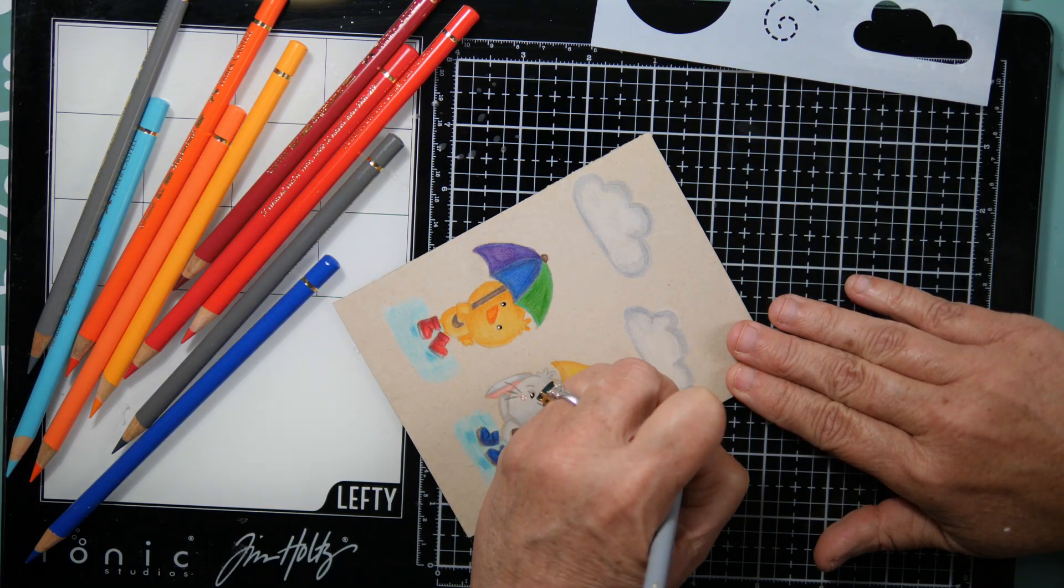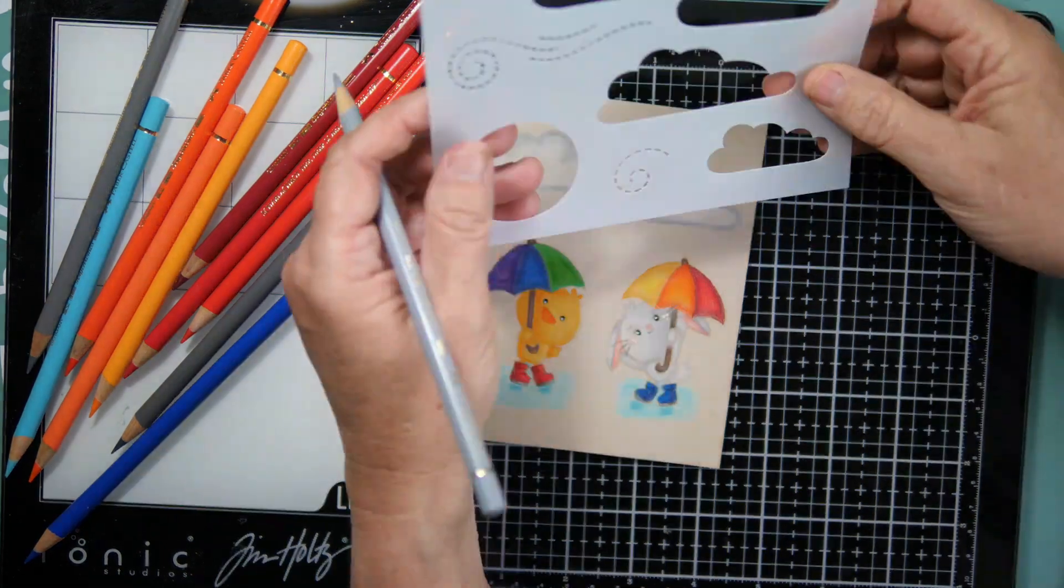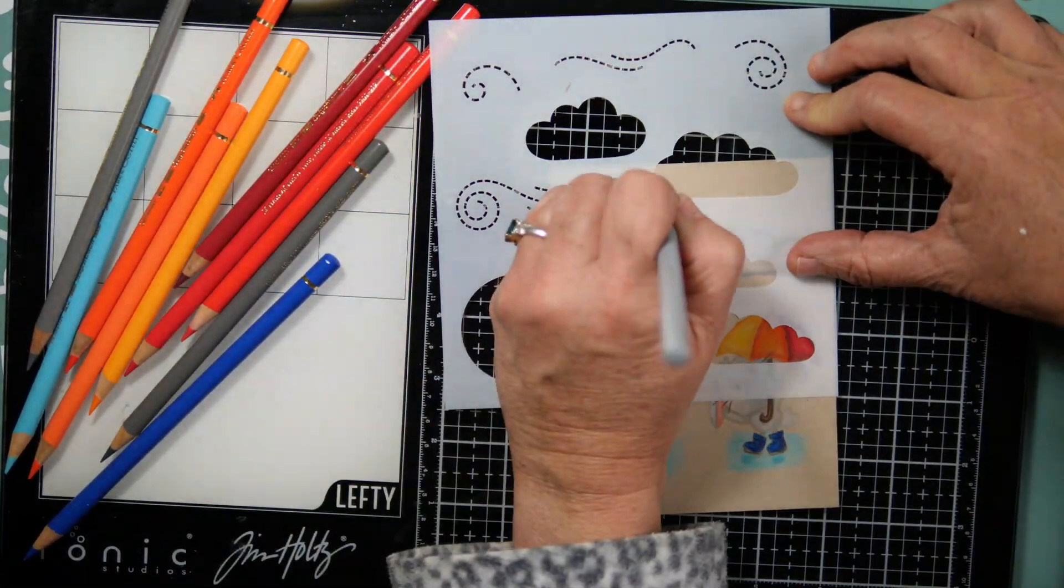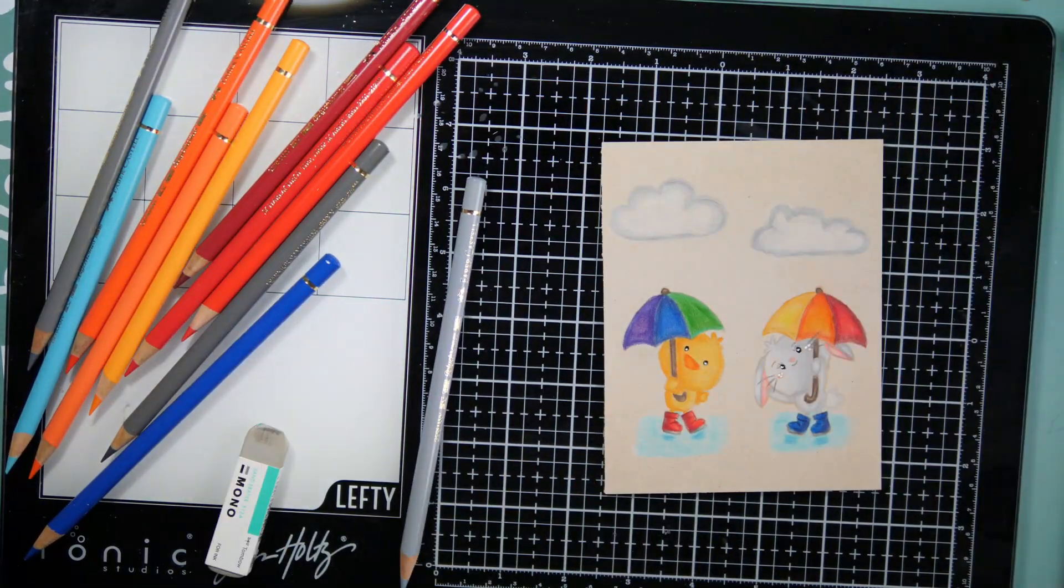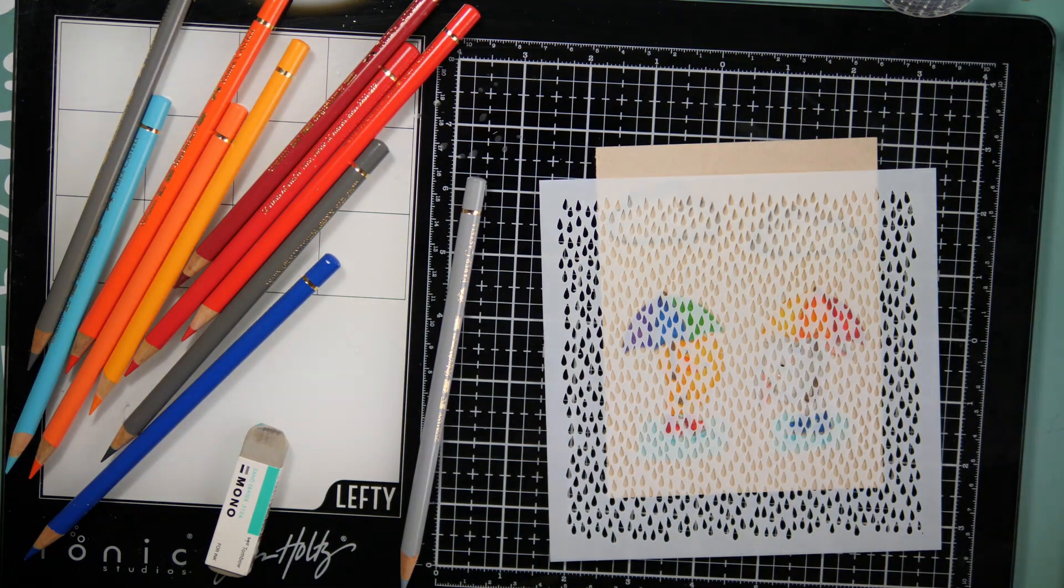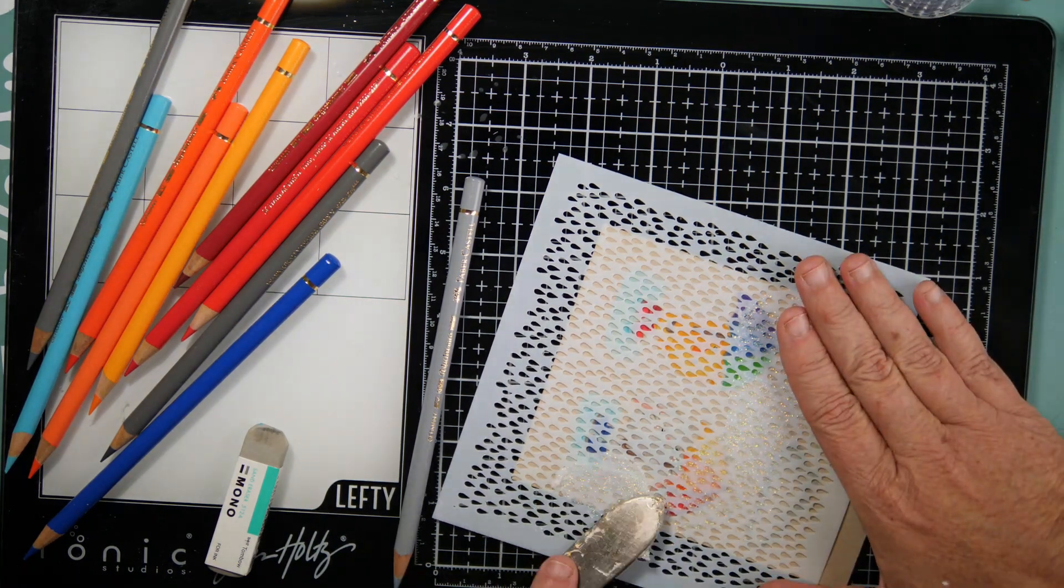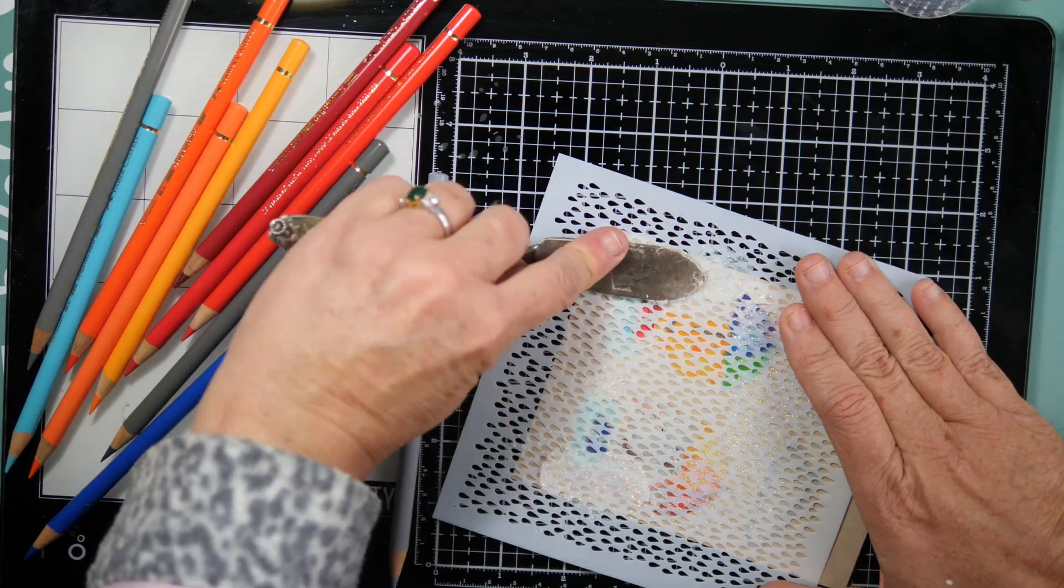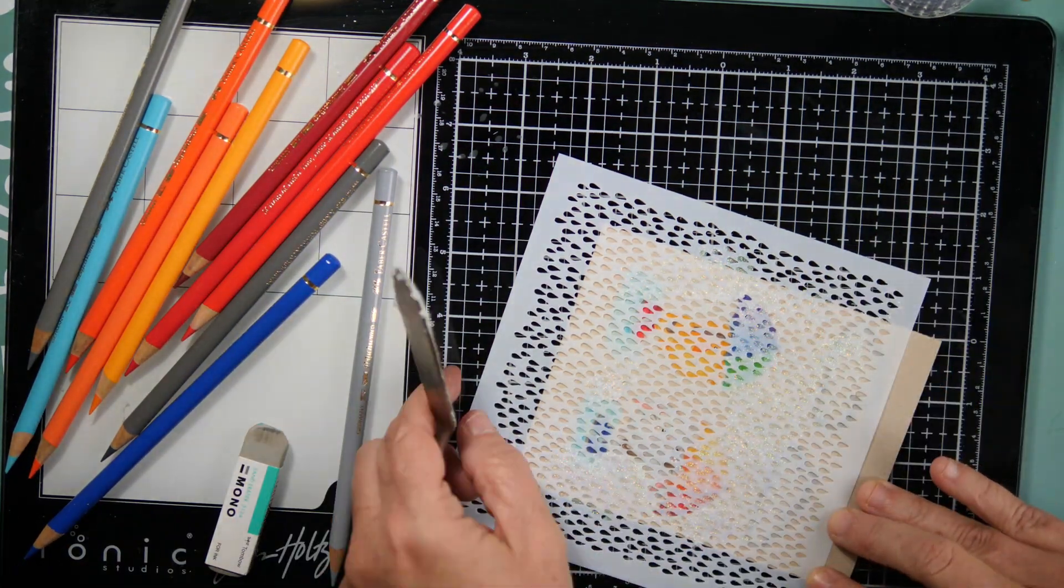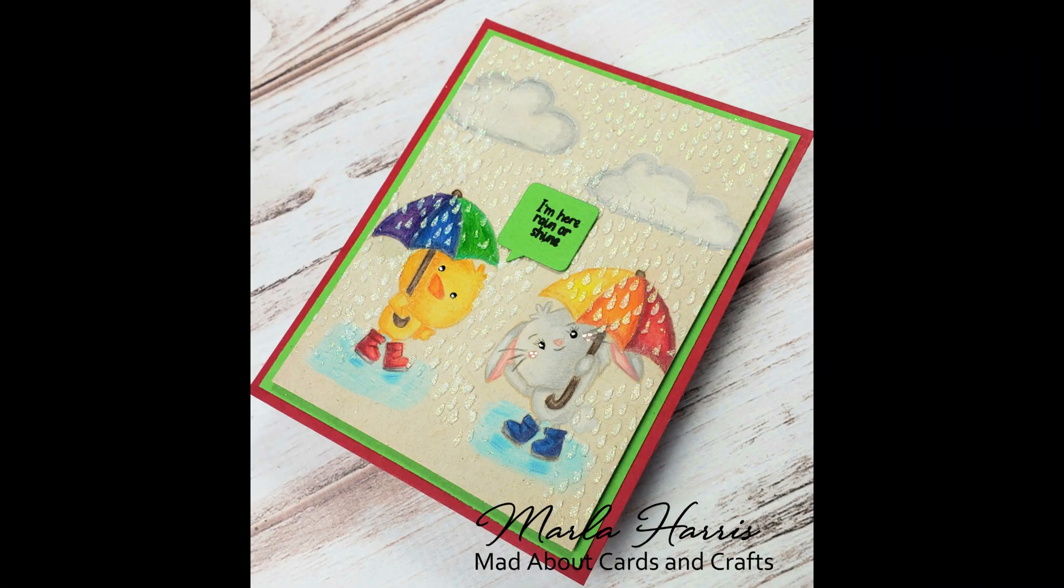I'm going to mount it. I cut this down to three and three quarters by five, then I put a green piece of cardstock, I believe both are Paper Trey Ink, that is cut down to four by five and a quarter. Then I use a red piece of cardstock that is four and a quarter by five and a half. I will put some fun foam behind that little craft piece and that is my card. Thank you so much for watching. I'll talk to you soon. Bye bye.